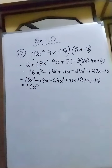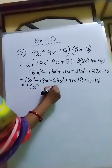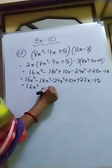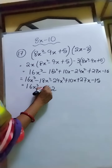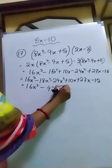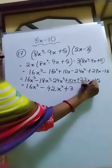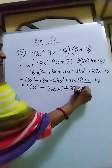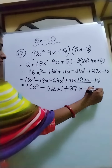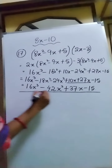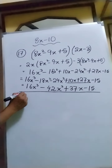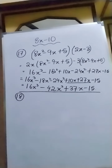So we are getting 16x cubed, then minus 18x squared and minus 24x squared — you will add those up to get minus 42x squared. Then 10x plus 27x gives 37x, minus 15. So the answer is 16x cubed minus 42x squared plus 37x minus 15. Sum number 17 ends.